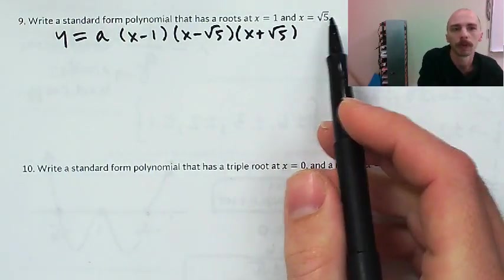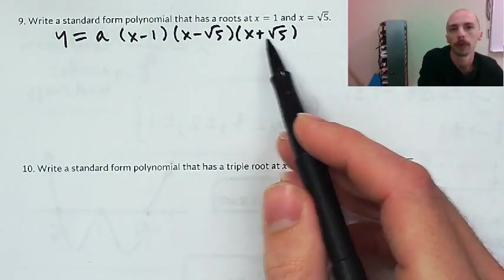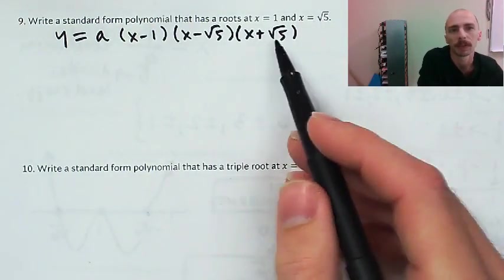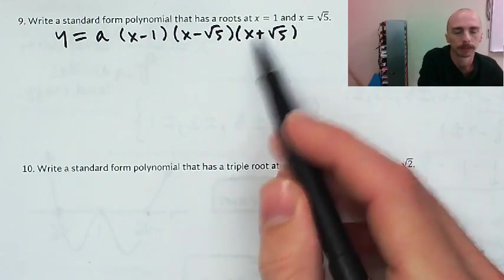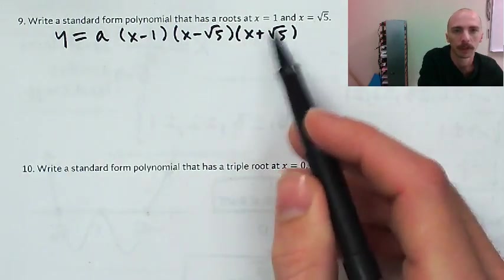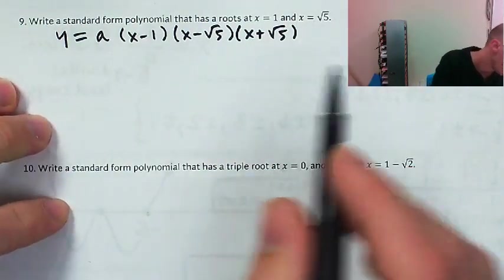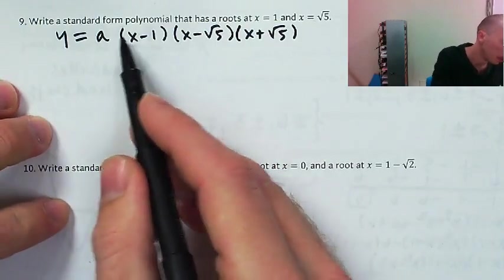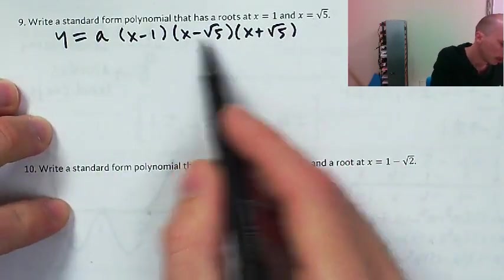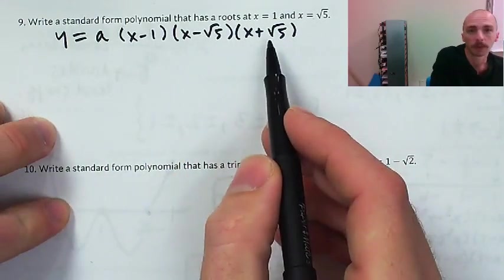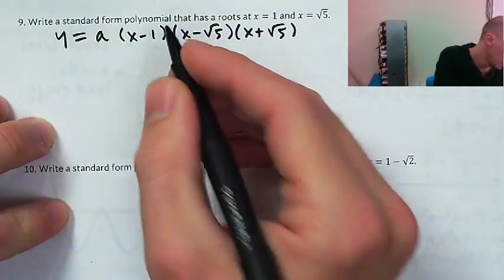But if negative square root of 5 is also a root, then that's also going to be a factor. So I'm going to multiply these all together, but I'm going to multiply the conjugate pair together first.